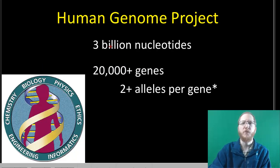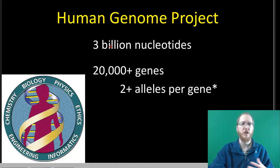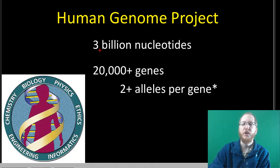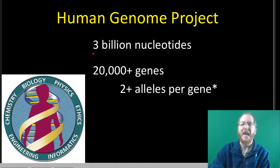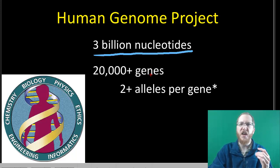To start off with humans, we might as well discuss the Human Genome Project, because this was a big international project where a bunch of scientists took five people and analyzed all three billion nucleotides they possess — every adenine, every thymine, every cytosine, every guanine.